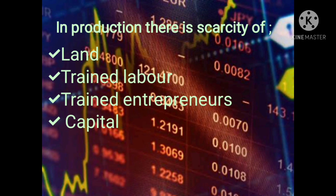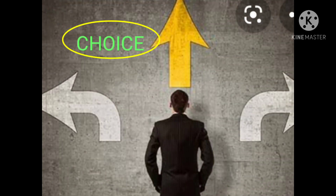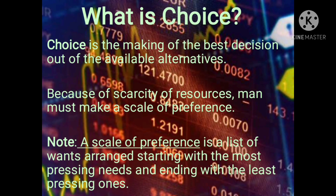These are scarce resources, and because of them, another problem arises — and that is the problem of choice. Look at that gentleman in the illustration. He looks confused and undecided — he's not sure whether to take the right, the left, or to continue with the yellow arrow. The decision he is about to make is what we will call choice.